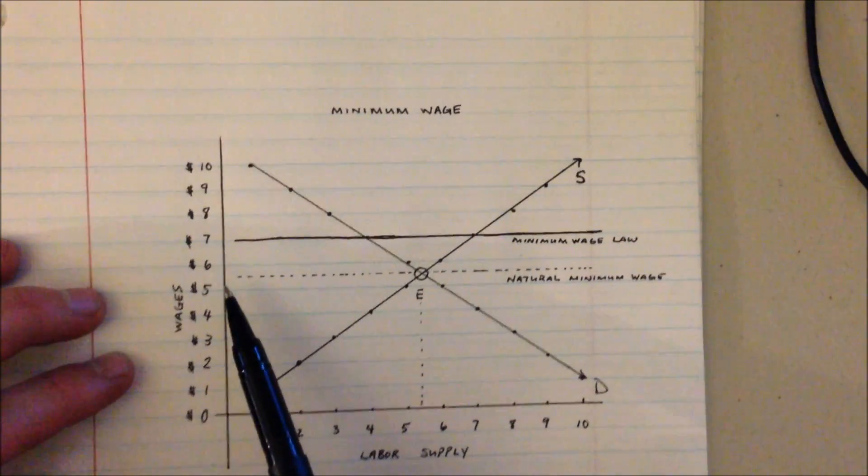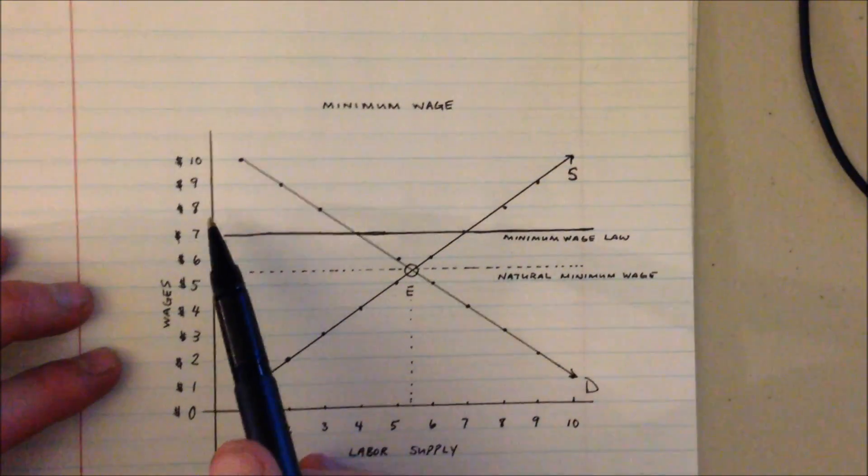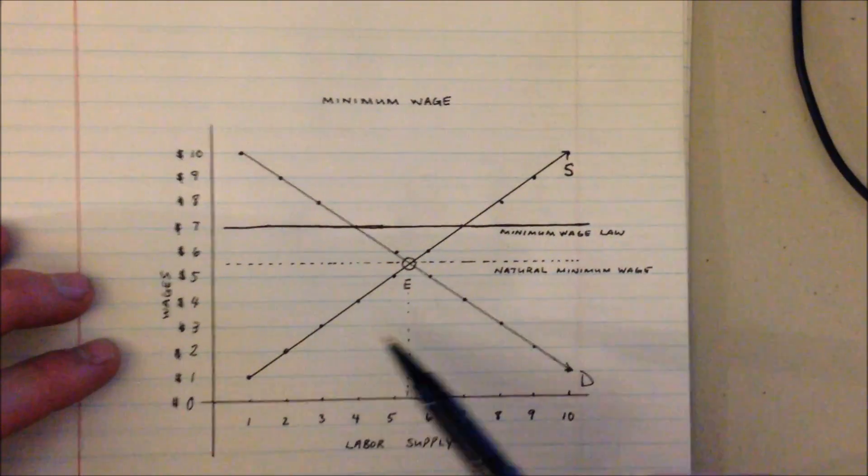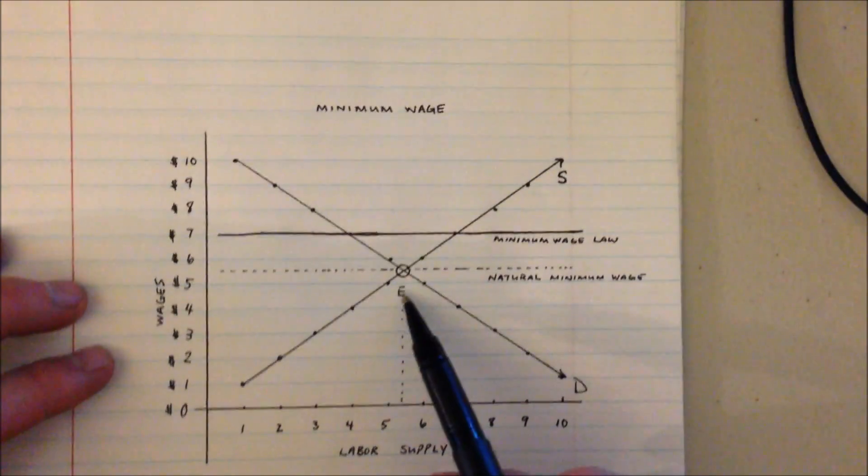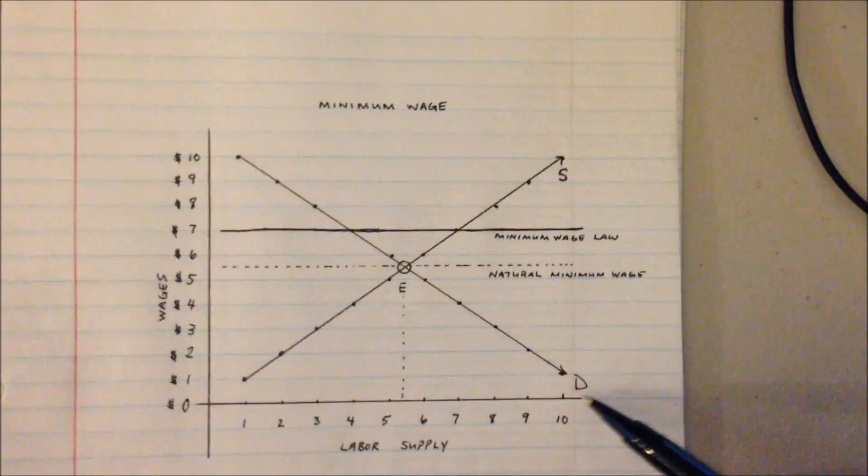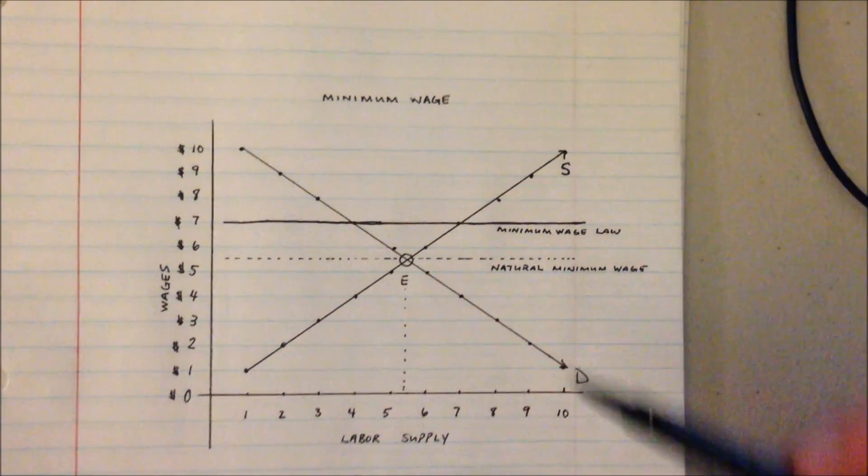The next thing we've added to our model is the concept of a minimum wage. The first thing we'll look at is the market's natural minimum wage, and that's where our supply line meets our demand line. That intersection is our equilibrium point where the market satisfies the demand to its maximum potential and the supply to its maximum potential.